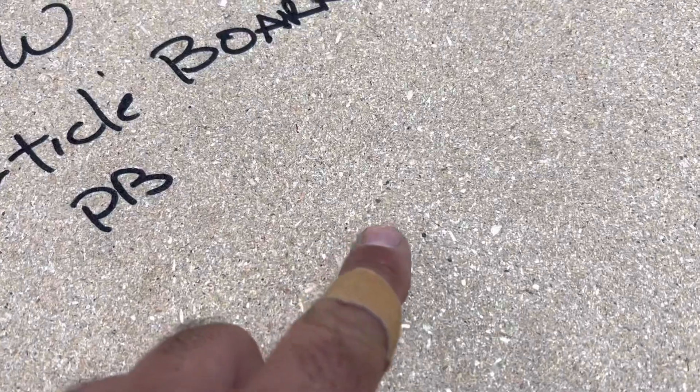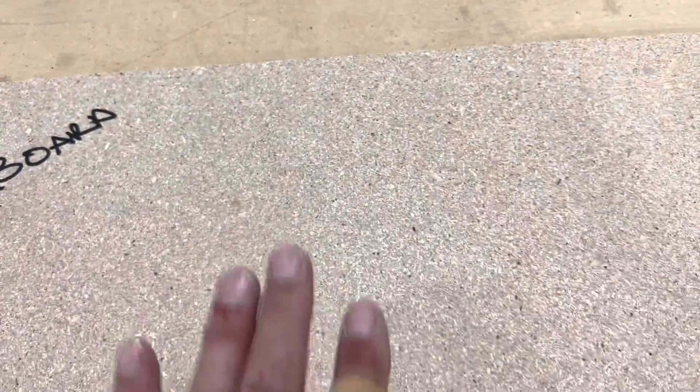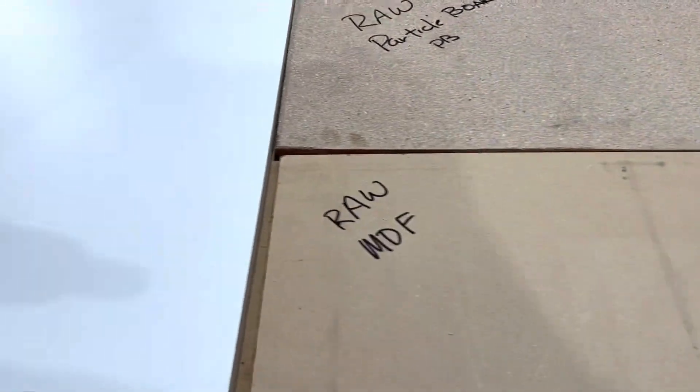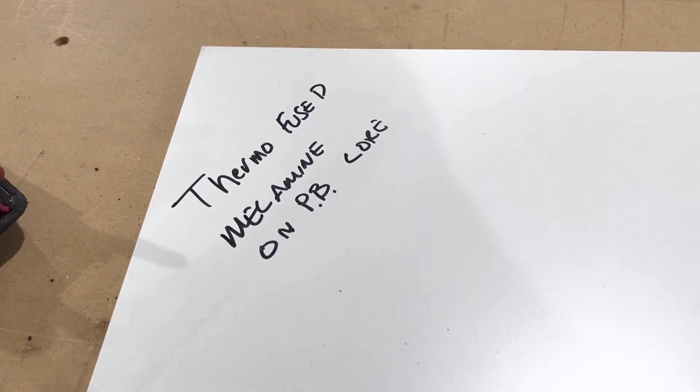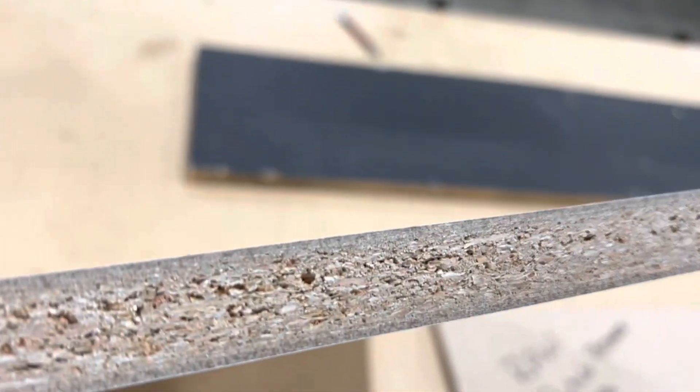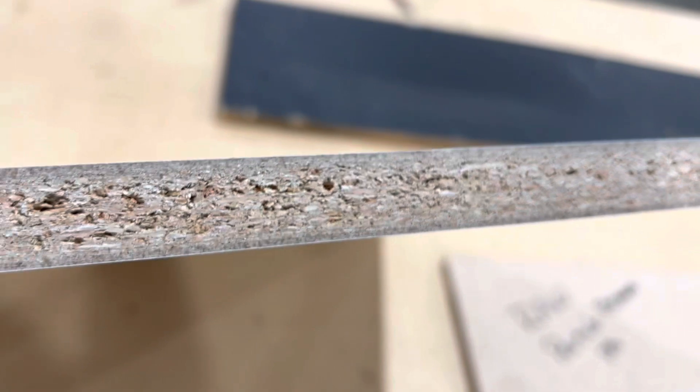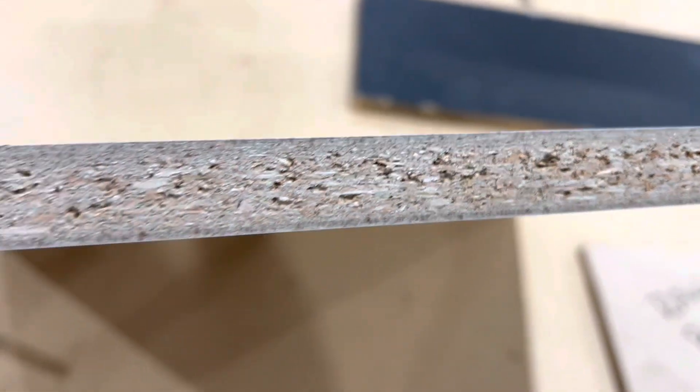Particle board, as you can see, has got bigger pieces of, bigger particulate in it, bigger chunks of sawdust in there. And it is glued together very similar and is what we use. We use a thermo-fused melamine on an industrial grade particle board core. And when you look at it, you'll notice that it's got fine on the top and on the bottom in the middle, it's got larger pieces.